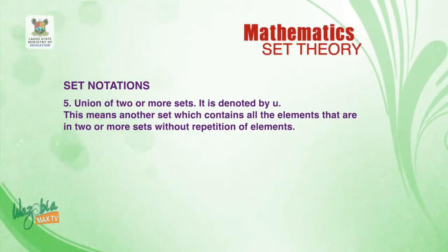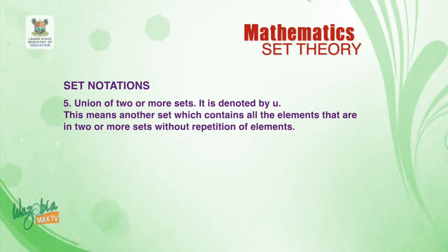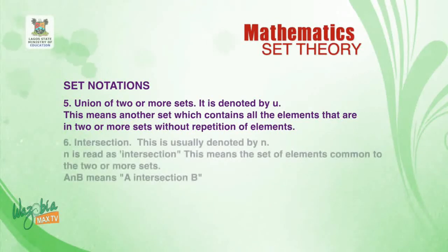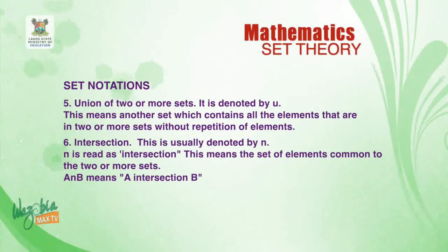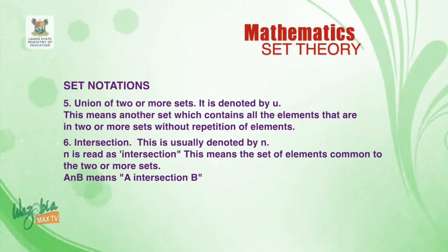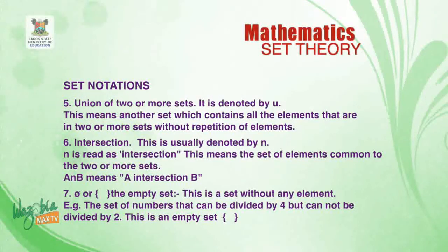Number five — union of two or more sets, denoted by U. It means another set which contains all the elements that are in the two or more sets without repetition of any element. Number six — intersection, denoted by an inverted U or ∩. It means another set which contains only the common elements between the two or more sets.